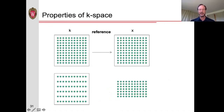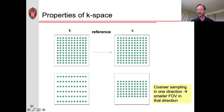Finally, as a preview of parallel imaging: if we only acquire every other line in k-space, we reduce the field of view in that direction — coarser sampling in one direction corresponds to a smaller field of view in that direction. Hopefully this has given you some insight into the properties of k-space and the usefulness of thinking about how we're acquiring data by scanning through k-space.